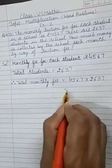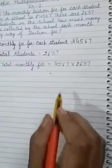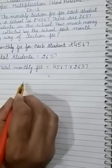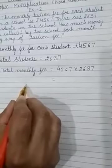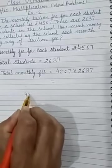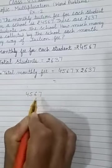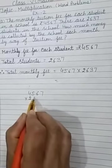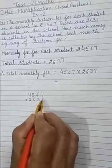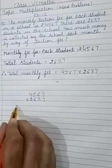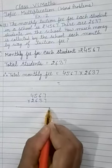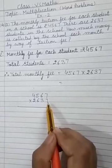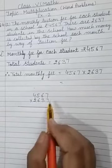Monthly fee means fee for one month. It is how much? We have to multiply this. It is 4567 multiplied by 2637. Now, what we will do? We will have to multiply it. We will do the multiplication inside. We write here 4567 and this number will be multiplied by 2637.